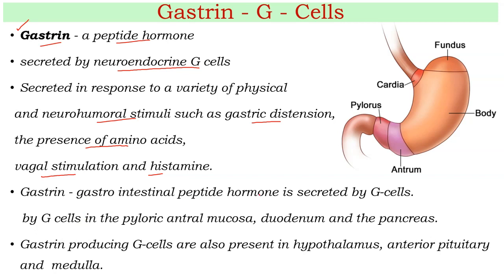This gastrointestinal peptide hormone is synthesized by the G cells, which are mainly located in the pyloric antral region and also in the duodenum and pancreas. Gastrin-producing G cells are also present in the hypothalamus, anterior pituitary, and medulla. In the stomach, gastrin is mainly secreted from the pyloric antral region.